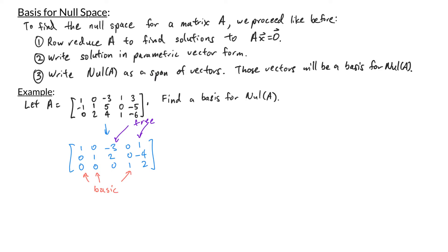To write our solution in parametric vector form, we need to write the basic variables in terms of the free variables. So I want to look at each row of this matrix and write the corresponding equation. So here we have x1 minus 3x3 plus x5. Now normally we would have the augmented column of zeros, but we just keep that in mind and say that this is equal to zero.